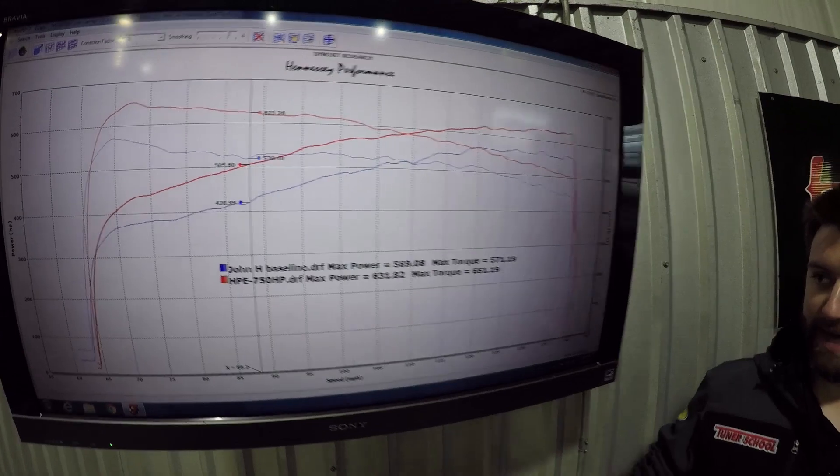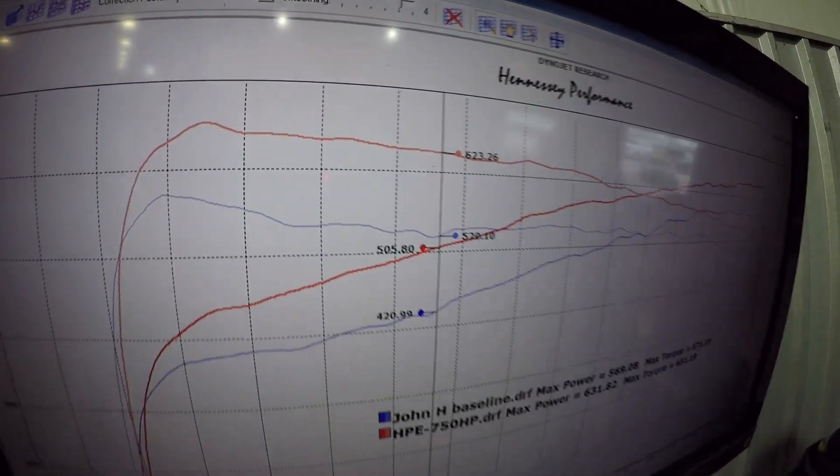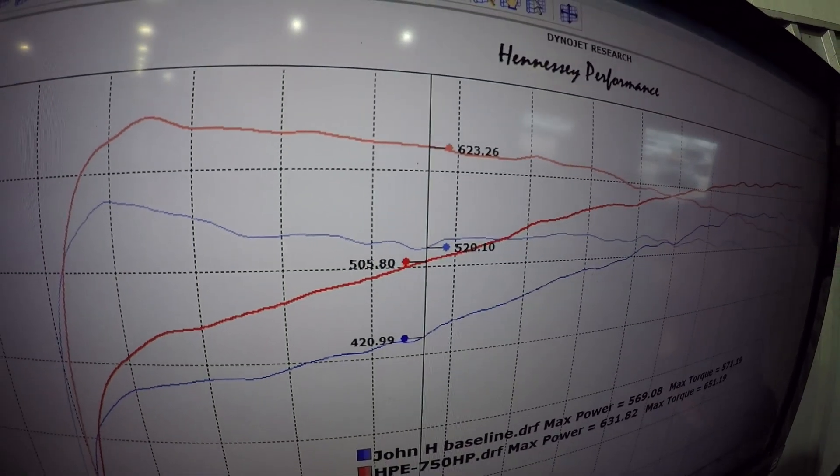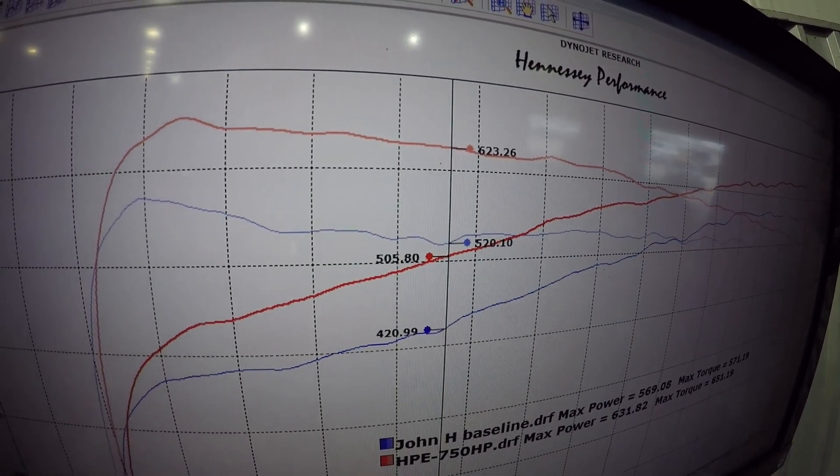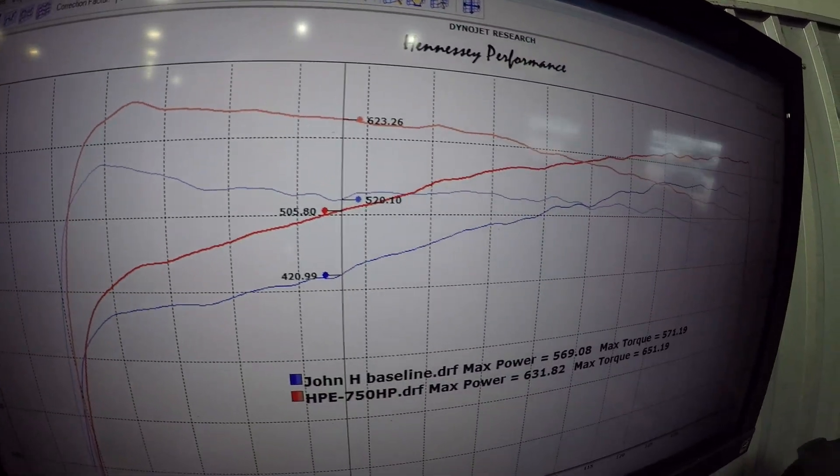And what you may notice about the graph here is the massive gains underneath the curve off the hit. We're actually picking up over 100 foot-pounds of torque from 520 stock to 623 foot-pounds of torque.